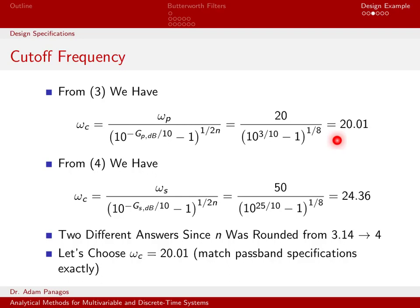We also had equation four though. Equation four allows us to compute the cutoff frequency from the stopband specifications. So if we plug in the stopband specifications and the filter order, we actually get a cutoff frequency of 24.36 radians per second.